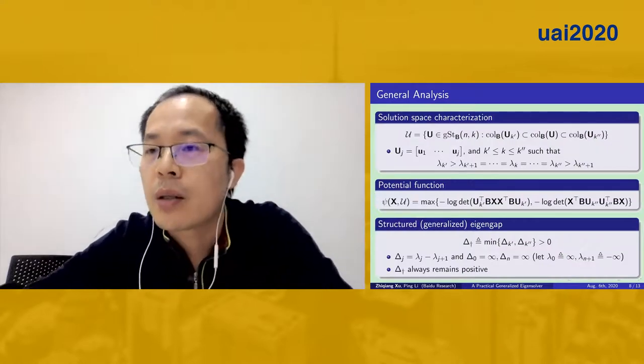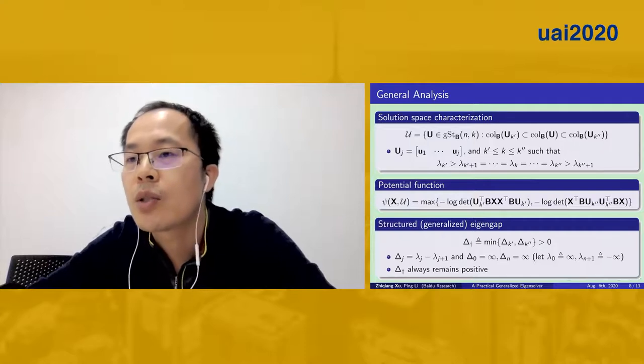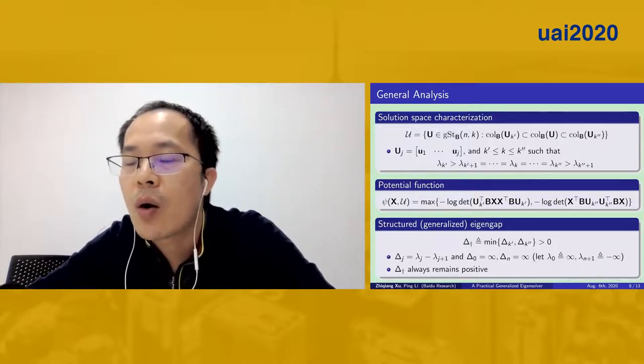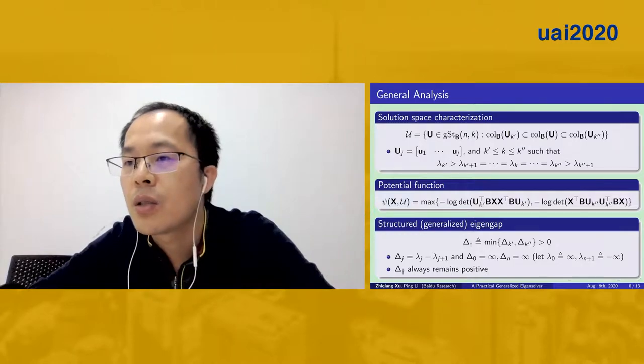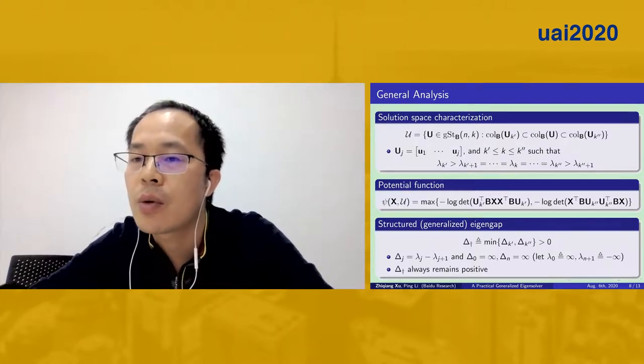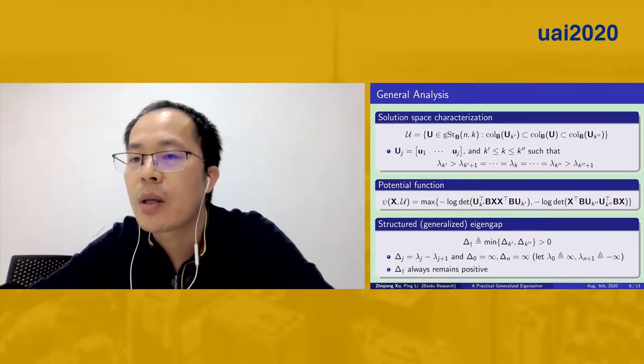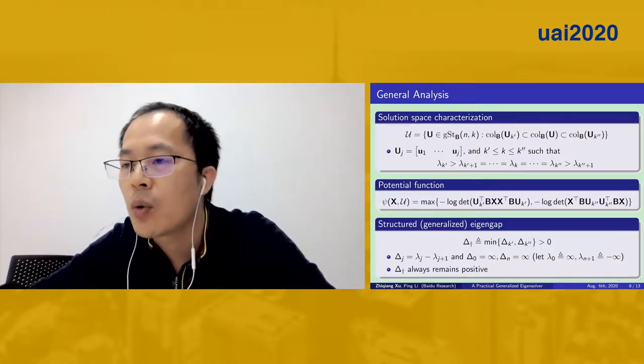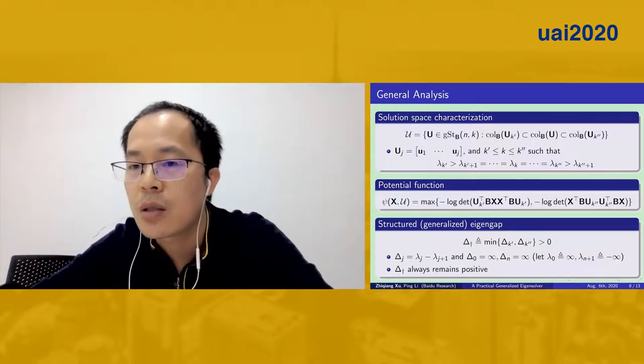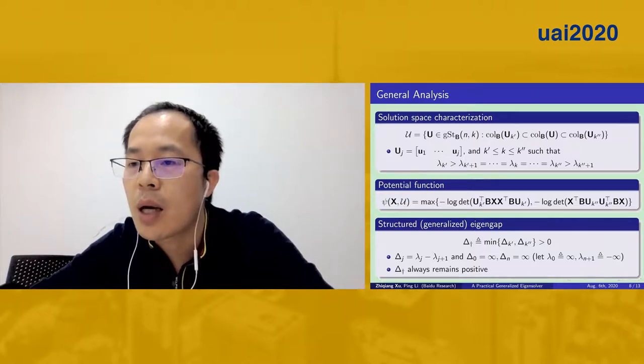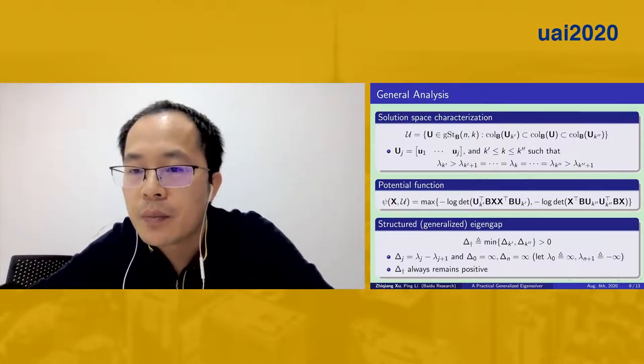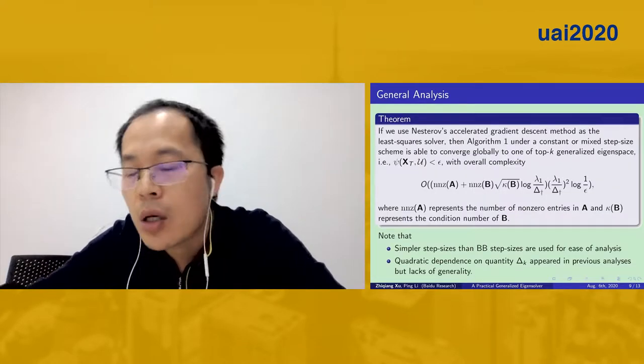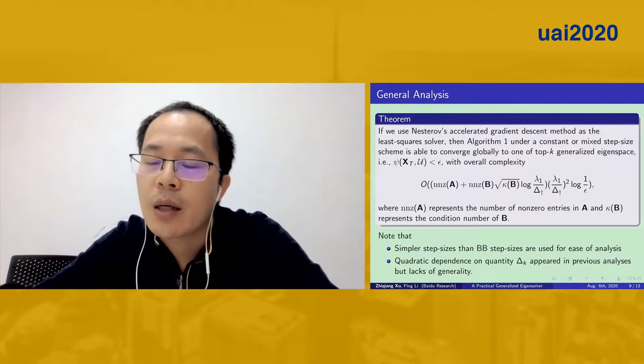Here, we provide a general analysis for the algorithm based on our characterization of the solution space. The goal is to accommodate all cases of the matrix eigenvalue pairs, not limited to those having a positive eigenvalue gap. Having this in mind, the solution space can be determined by two subspaces, U k' and U k'', where eigenvalue gaps at the two integers k' and k'' that are nearest to and crossing k are positive.